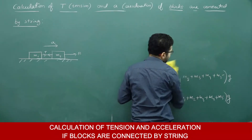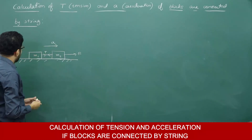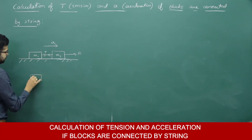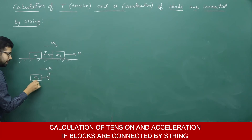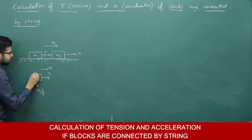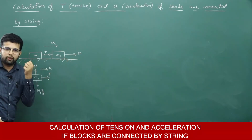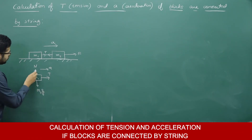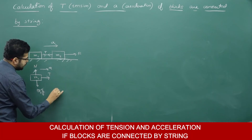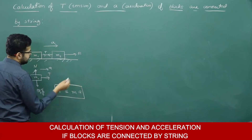First, let us write the free body diagram for both m1 and m2. For m1, only one horizontal force is acting — that is tension T. The tension itself is responsible for acceleration. Weight acts downward and normal reaction acts upward, so they cancel. Writing only horizontal forces: T is equal to m1 times A.